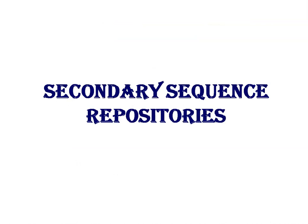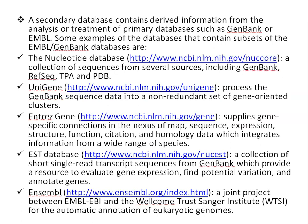Secondary sequence repositories: a secondary database contains derived information from the analysis or treatment of primary databases such as GenBank or EMBL. Examples include: the Nucleotide database — a collection of sequences from several resources including GenBank, RefSeq, TPA, and PDB. Also Unigene, which processes GenBank sequence data into a non-redundant set of gene-oriented clusters.